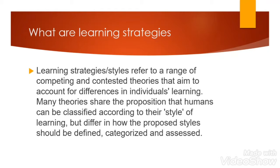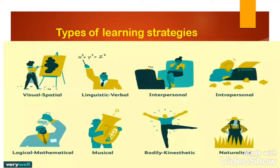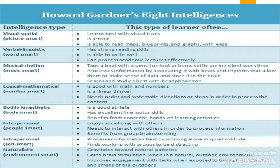What are learning strategies? Learning strategies refer to a range of competing and contested theories that aim to account for differences in individual learning. Many theories share the proposition that humans can be classified according to their style of learning, but differ in how their purpose styles should be defined, categorized, and assessed. There are many types of learning: visual or spatial, linguistic or verbal, interpersonal, intrapersonal, logical mathematical, musical or audio, bodily kinesthetic or physical, and naturalistic. These strategies are all linked to Howard Gardner's 8 intelligences.